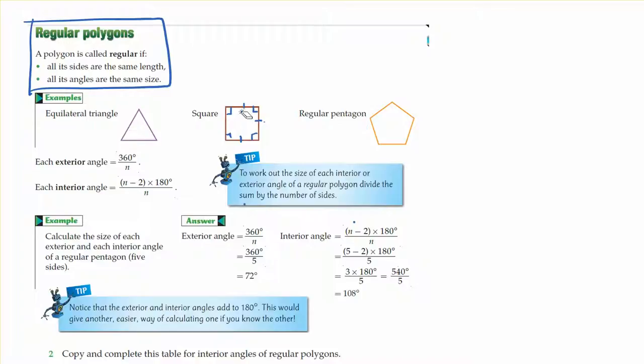Inside of a square, like I've shown here, each of the angles is 90 degrees, so they're all the same, and we know that all the sides have to be the same length as well.